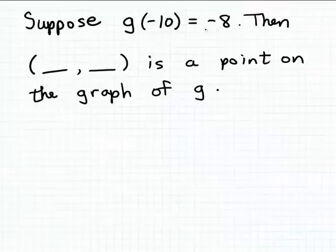So the information that we're given about the function g is in the form of function notation. We're told here that g of minus 10 is equal to minus 8. So recall that g of minus 10, that function notation indicates that the output that matches the input minus 10 is minus 8.